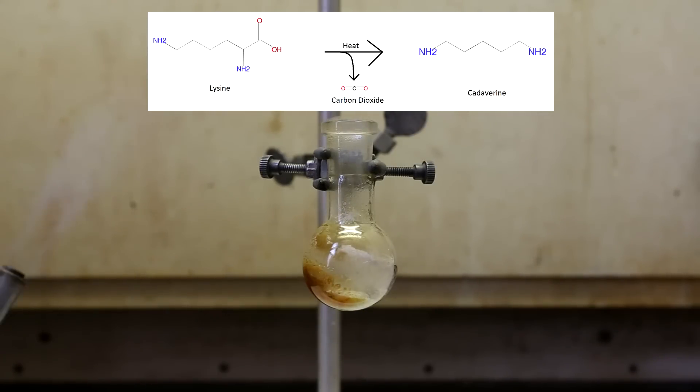In a decarboxylation reaction, heat is applied and the carboxylic acid group as shown in red will break off the molecule and leave as carbon dioxide gas. When the carboxylic acid group leaves, it is replaced with a single hydrogen atom.